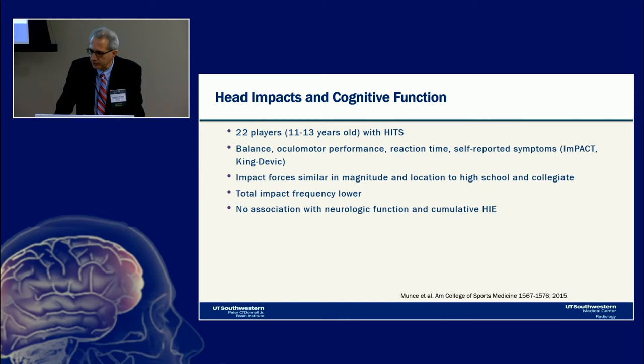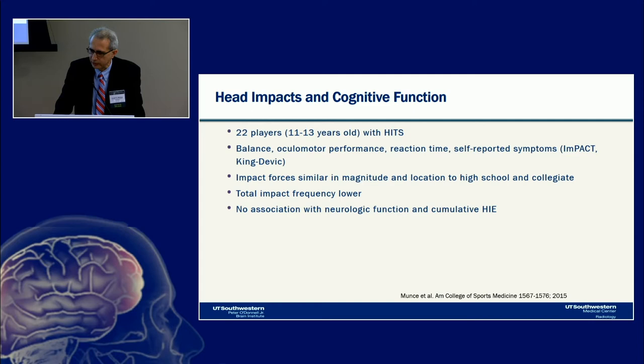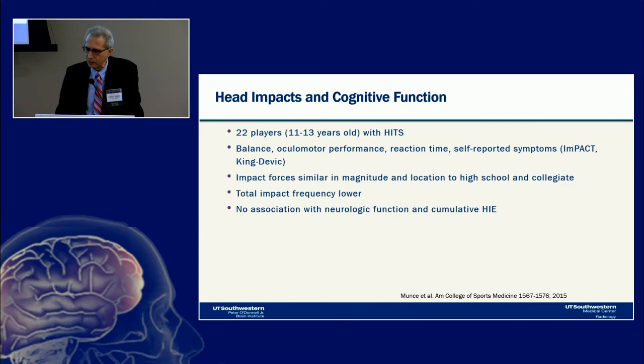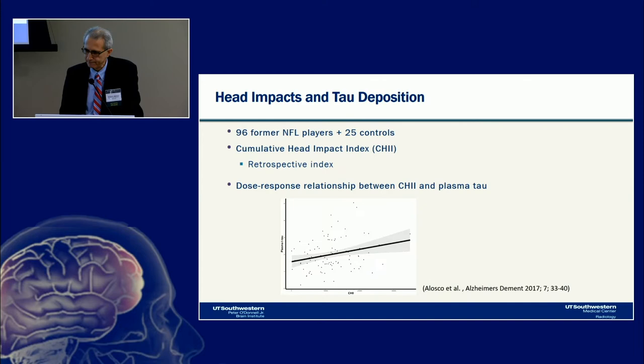A 2015 study by Ramon et al. examined 22 youth players aged 11–13 using the HITS helmet-embedded sensor system. They measured balance, oculomotor performance, reaction time, self-reported symptoms via ImPACT, and the King-Devick eye movement test. Impact forces were similar in magnitude and location to high school and collegiate athletes even at the youth level, though total impact frequency was lower. This was one of the negative studies, finding no association between neurologic function and cumulative head impact exposure.